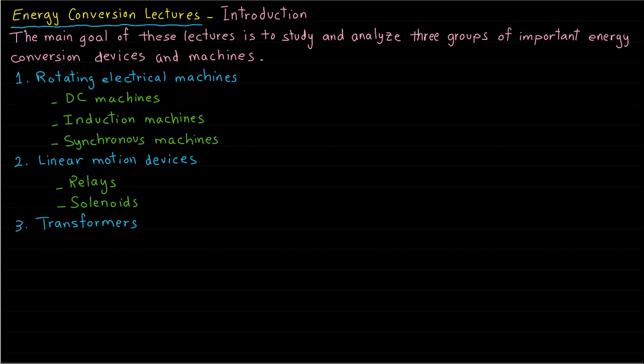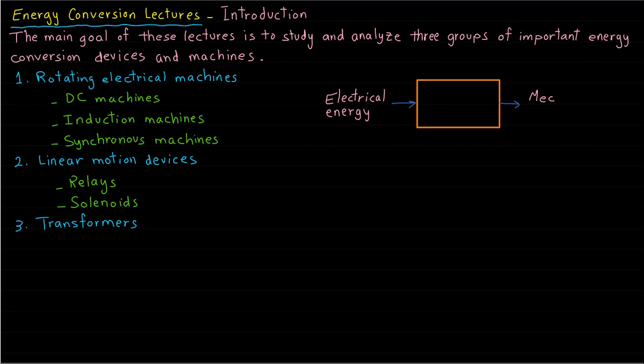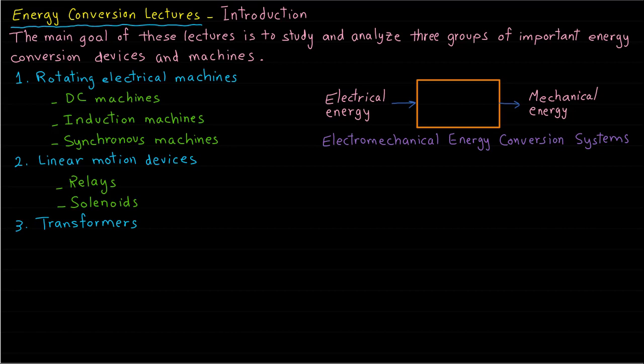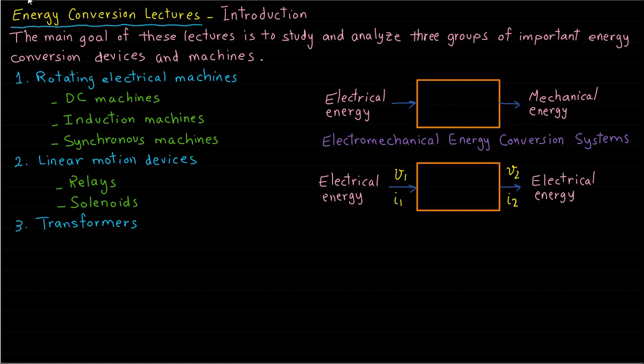All of these machines and devices can be categorized into two energy conversion systems. The first system converts electrical energy into mechanical energy and is called the electromechanical energy conversion system. The second system is called the electrical energy conversion system, and it converts electrical energy from one voltage and current level to electrical energy of another voltage and current level.